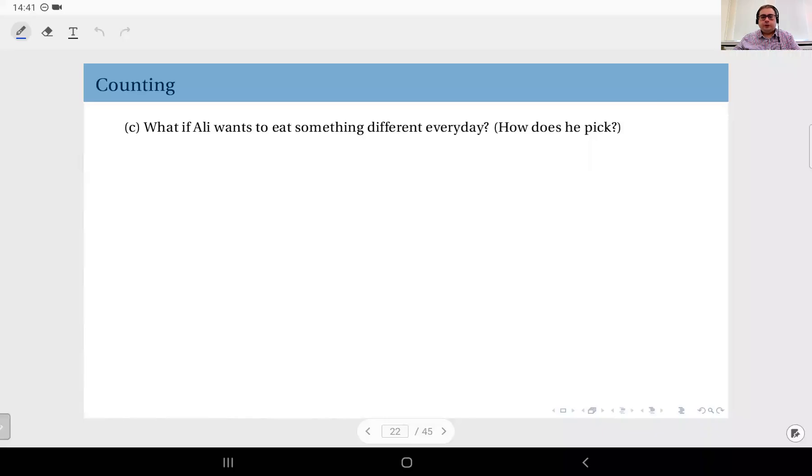In the previous question, Ali was allowed to repeat his orders each day. Now let's change that. What if Ali wants to eat something different every day? He doesn't want to repeat any of the dishes he has tasted, so every day he wants to taste something new. So how does he pick?